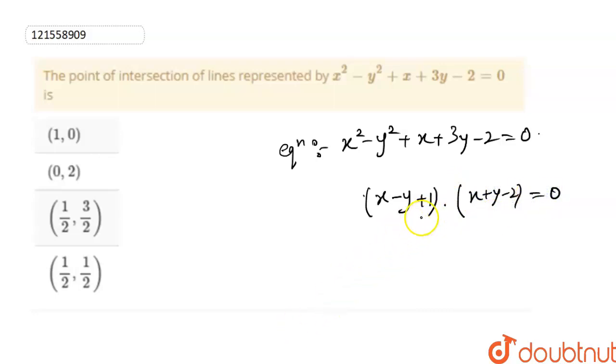So these two factors are going to be equal to 0. If you multiply them, then this is going to be equal to 0. So here I can say that x minus y plus 1 would be equal to 0, and the other one is going to be x plus y minus 2 is equal to 0.